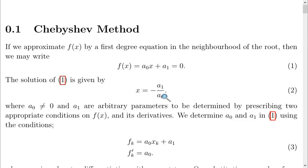But this a1 and a naught can be determined. In determining a1 and a naught, you should ensure that a naught is not equal to zero, and a1 can be an arbitrary parameter.